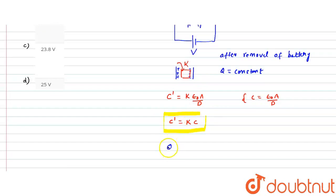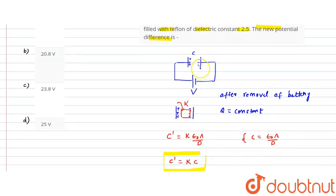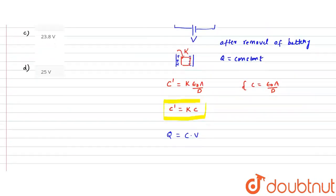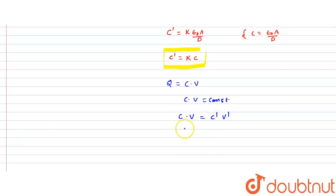Now guys, let's talk about what the voltage is going to be. We know that our charge Q equals C times the potential difference between the plates. The potential difference initially was V, which is given in the problem as 50 volts. Since Q is constant, C times V becomes constant, so C·V = C'·V'.